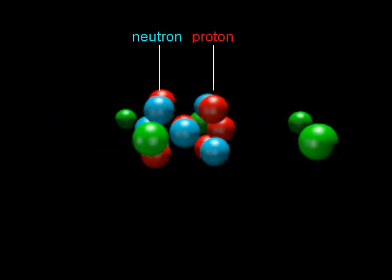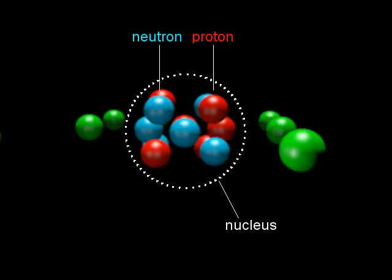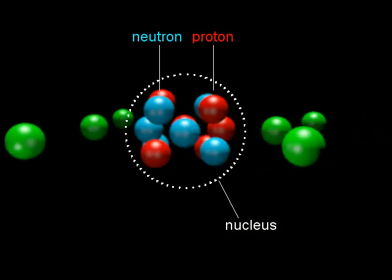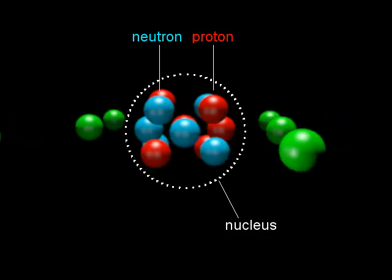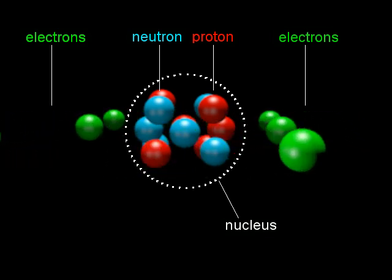At the center of an atom are protons and neutrons. We call this center the nucleus of the atom. That's where the word nuclear comes from, since anything to do with nuclear deals with stuff in the nucleus of the atom. And to complete our model, circling around the nucleus are electrons.